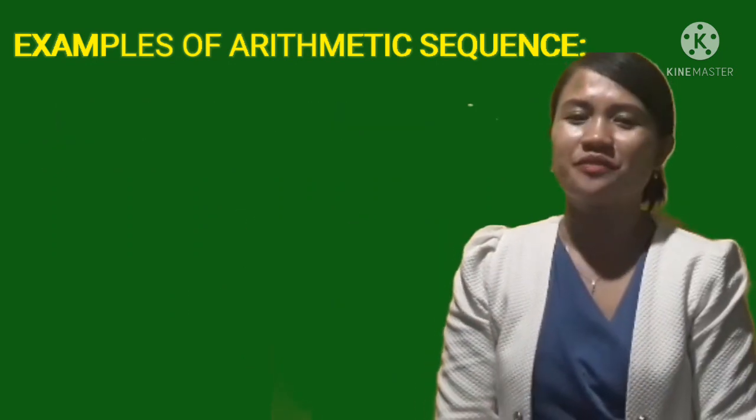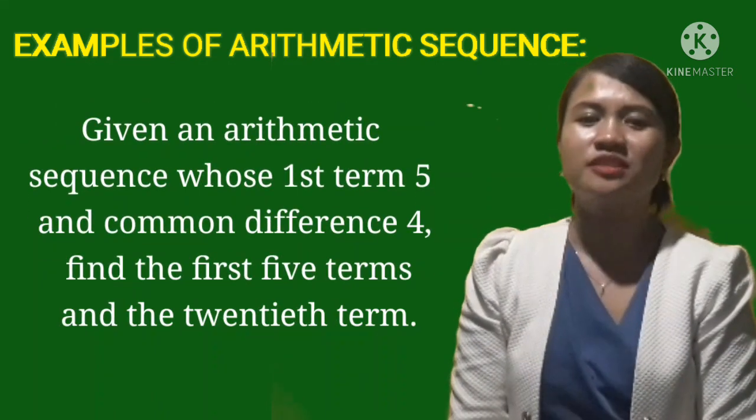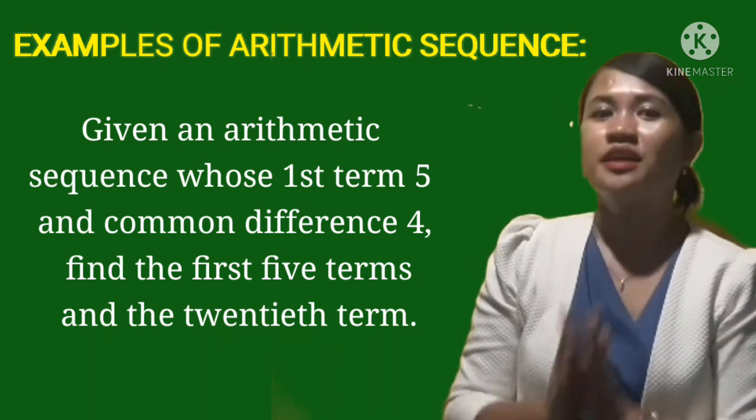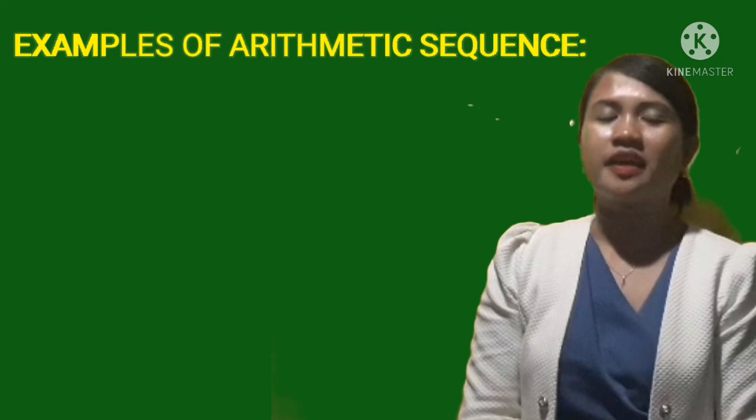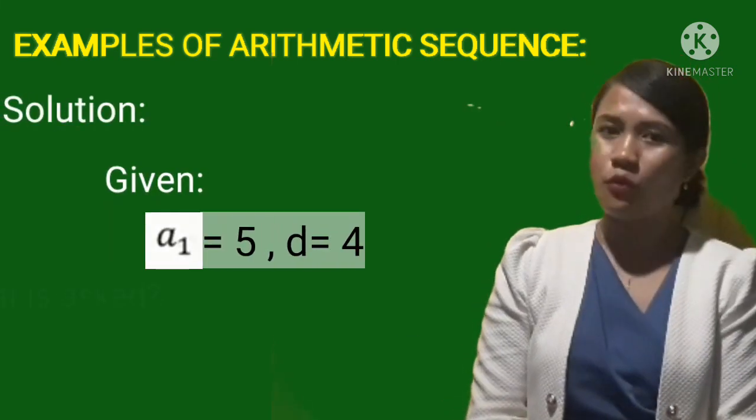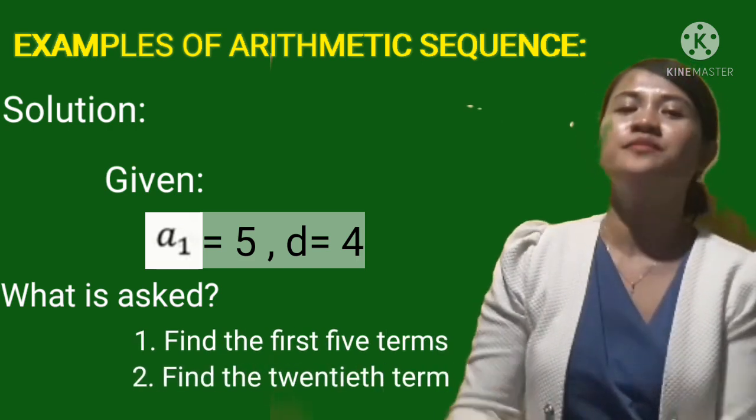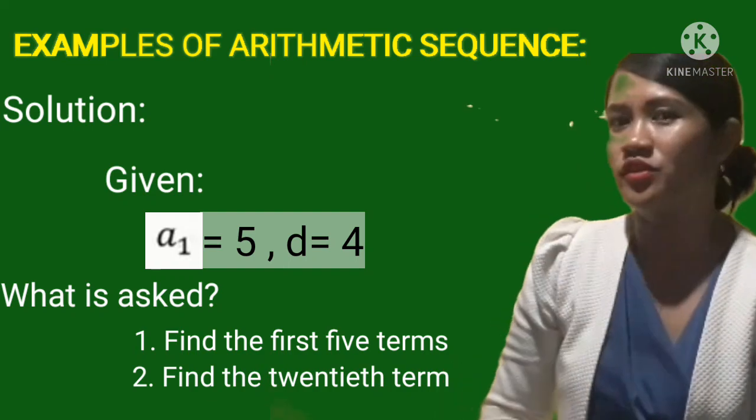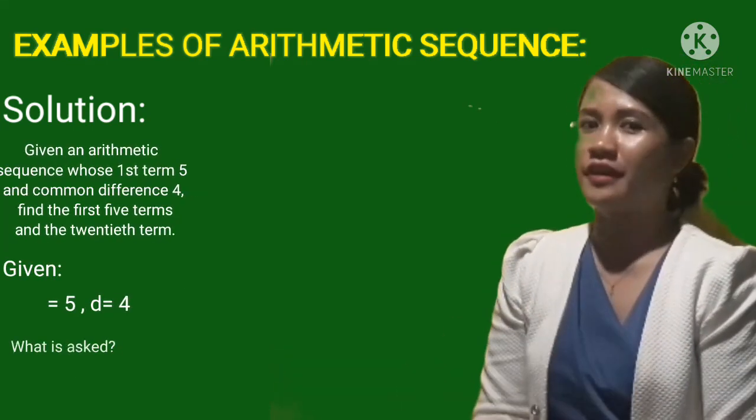Given an arithmetic sequence with first term equal to 5 and common difference equal to 4, find the first 5 terms and the 20th term. So what are the given? First is A sub 1 equal to 5, then d is equal to 4. What is asked? Find the first 5 terms, second is the 20th term. So here are the solution for the first question.